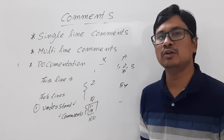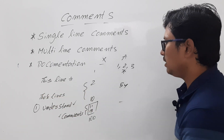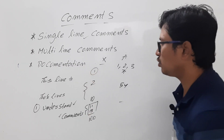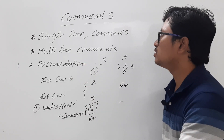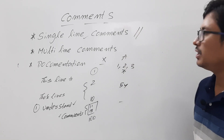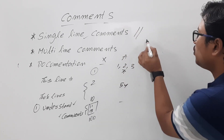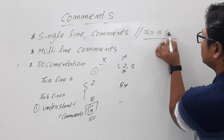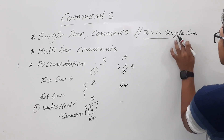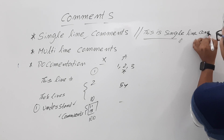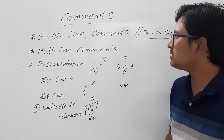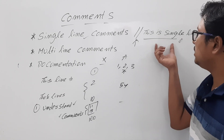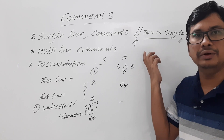Now let's discuss about single line comments. If you just want to write a single line comment, or you want to comment a particular line, you can use the single line comments. Single line comments are represented using two forward slashes, and then whatever comment you want to write, you can write it. Once the compiler recognizes these two slashes, it will understand that this is a comment and will ignore it when converting to bytecode.